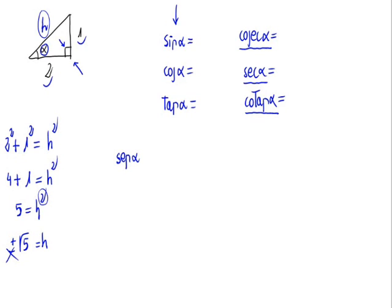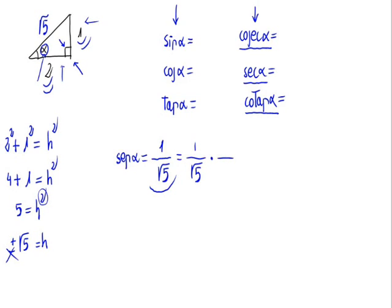Now let's calculate the sine. The sine of alpha is equal to the opposite leg divided by the hypotenuse. We have two legs, 2 and 1. The opposite leg is the leg that doesn't touch alpha, and that would be 1 in our case. So the sine of alpha equals 1 divided by the square root of 5. We will use this form for calculating the inverse function.